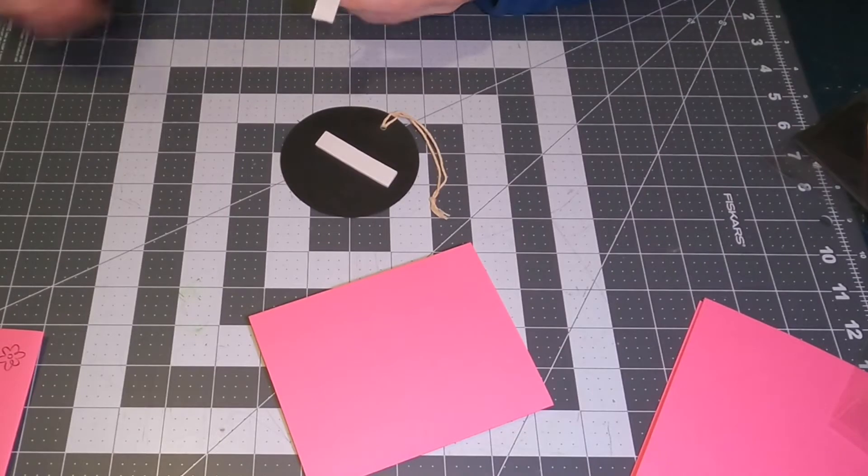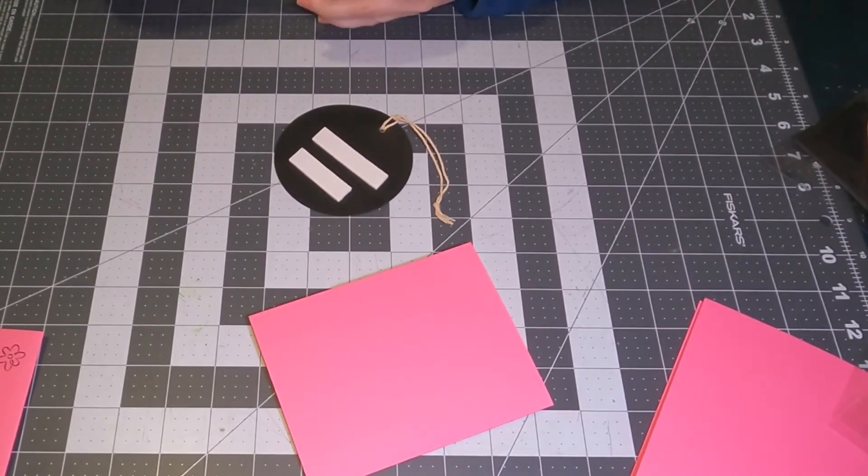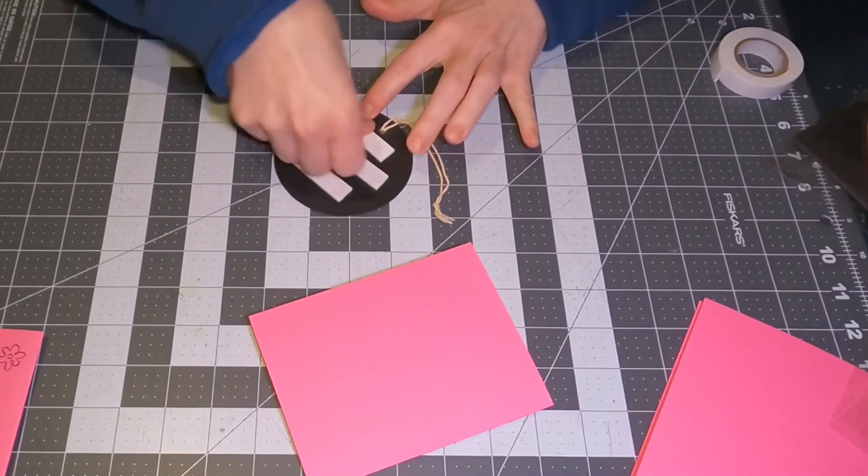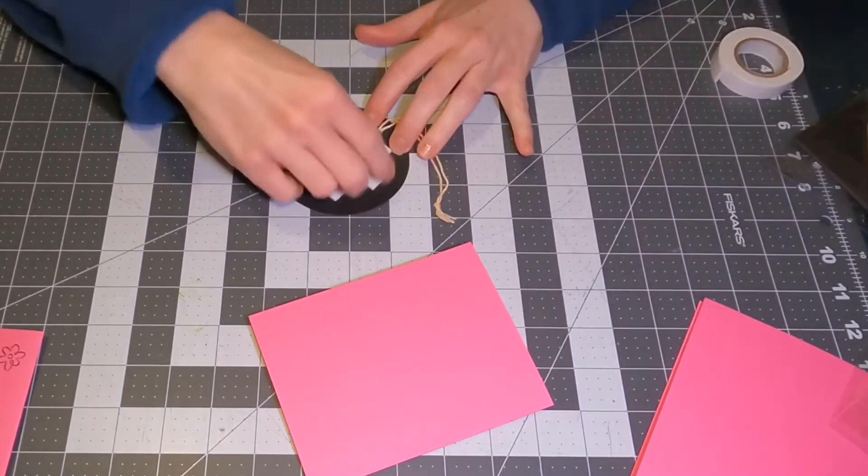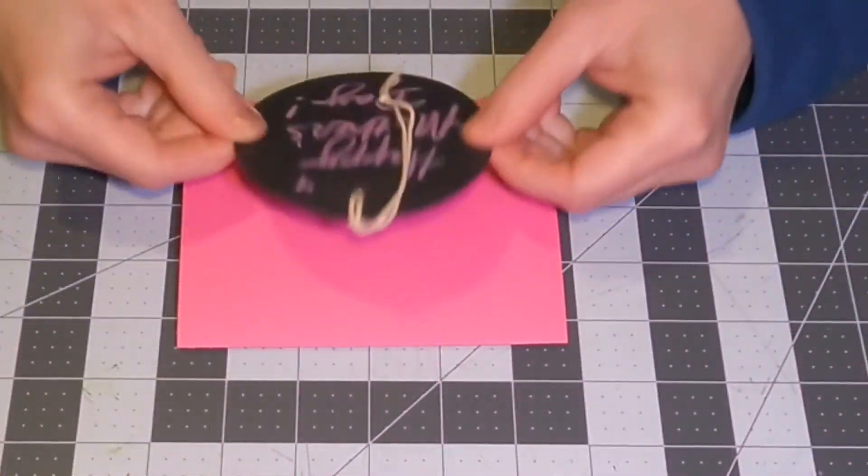And then this foam stickers, you can buy it in the roll or you can buy little circles, whichever you prefer. Those are all from Dollar Tree. Cardstock is not from Dollar Tree. As far as I know, they don't carry that yet.